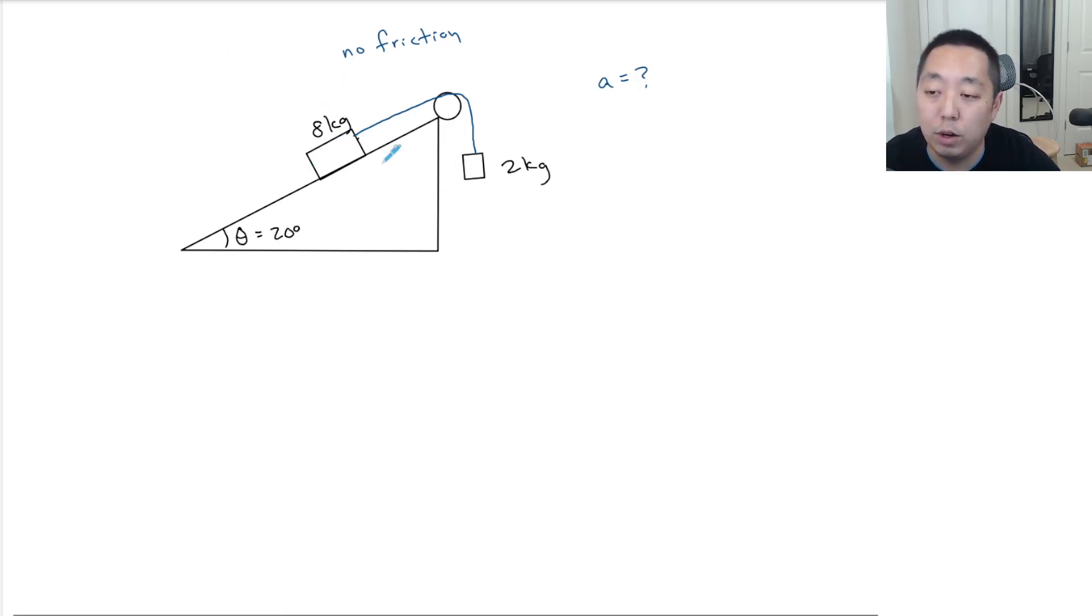So I have a block on this ramp that's 8 kg and then I have a 2 kg block here. Now the first thing I want to do is draw a free body diagram of each block. This guy has mg downward or 8g downward, and then we have a normal force here. Normal force is always perpendicular to the surface—in this case the surface of the ramp. And then we have a tension force pulling this way. Tension force is always pull. And that's it, there's nothing else touching the block. There's no friction.